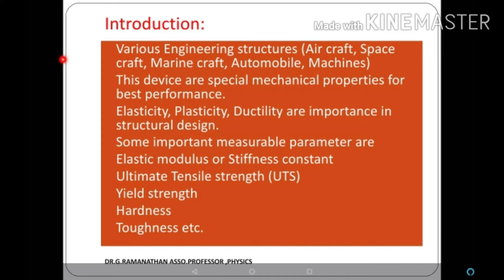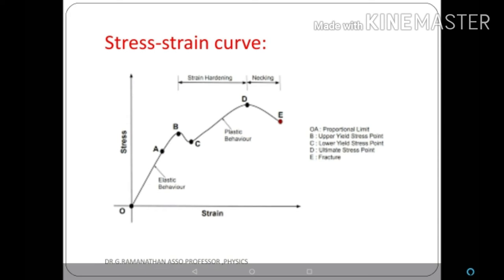The stress-strain diagram was already discussed in Properties of Matter in Semester 1. Strain means change in dimension divided by original dimension. Stress means restoring force per unit area. Strain is along the x-axis and stress along the y-axis. When stress increases, strain also increases up to region OA, which is called the proportionality limit or linear region.